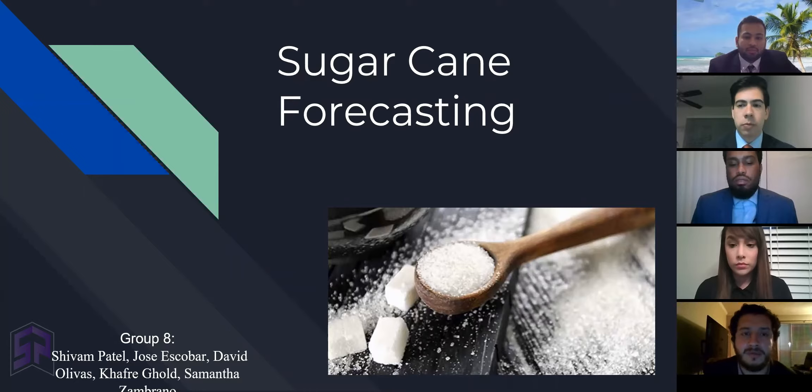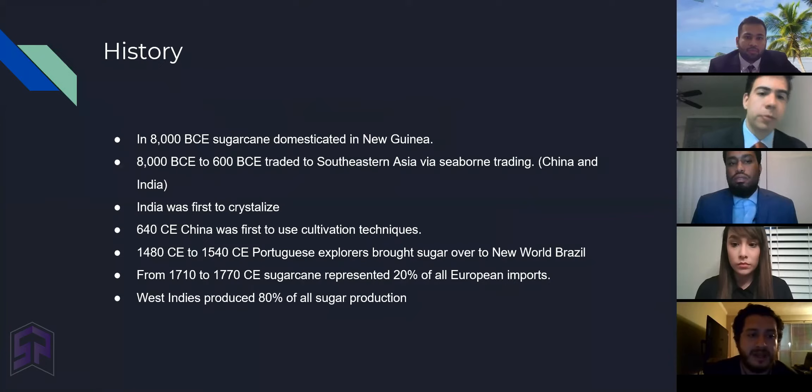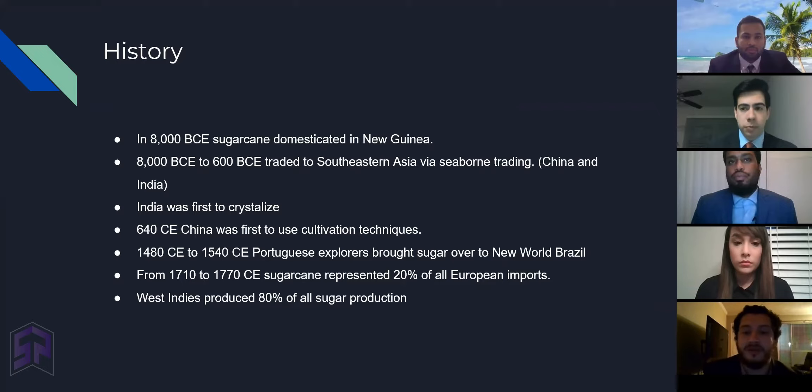A little history about sugarcane. In 8,000 BC, sugarcane was domesticated in New Guinea, where they ate it raw. From 8,000 BC to 600 BC, it was traded in Southeastern Asia via seaborne trading, including China and India.